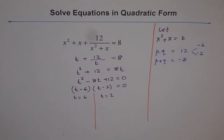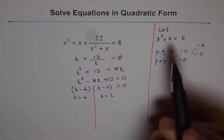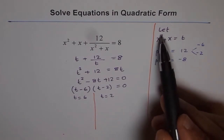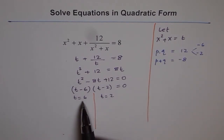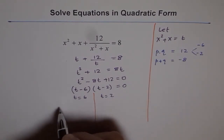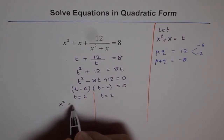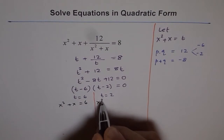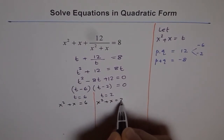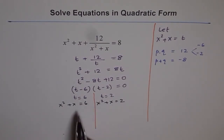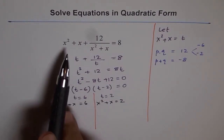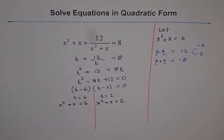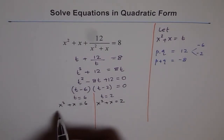Now we recall that t was substituted as x squared plus x. So t equals 6 means x squared plus x equals 6, and t equals 2 means x squared plus x equals 2. We now need to solve each of these quadratic equations to find x. This was effectively a degree-4 equation, so we are solving quadratic equations twice.